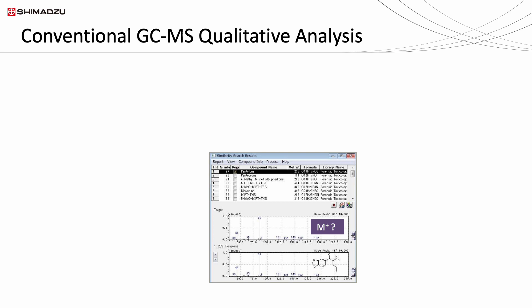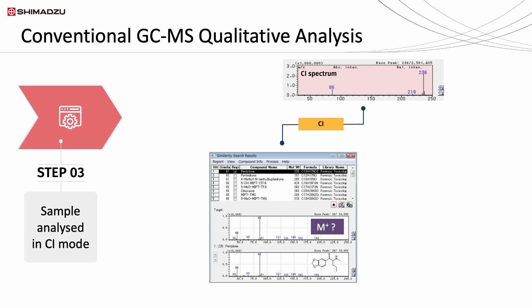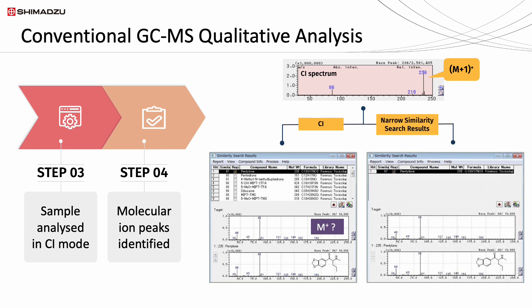Therefore, a soft ionization technique — CI data acquisition — is required. The molecular weight information of the compounds can be obtained in CI mode. Thus, the similarity search results can be narrowed down, and the compound identification process becomes much easier.